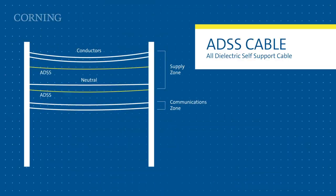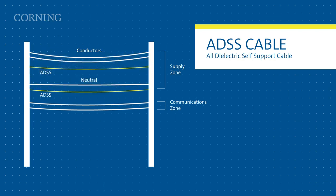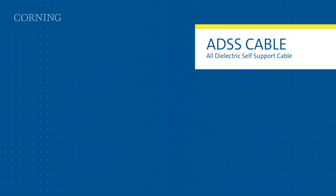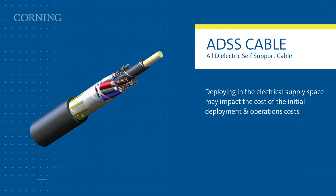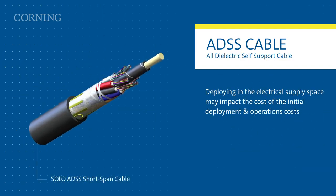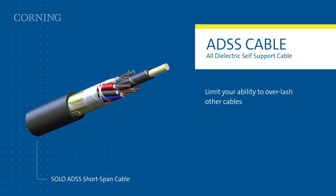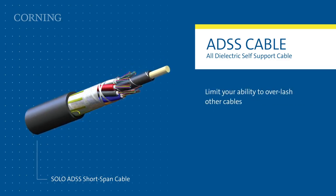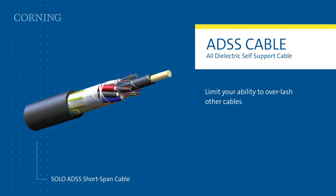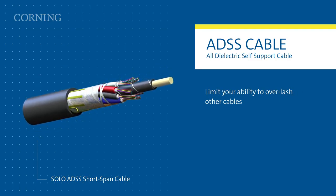Deploying in the electrical supply space may impact not only the cost of the initial deployment but your operations cost to service and maintain your cable plant over time. ADSS cables also limit your ability to overlash other cables later should additional fiber be needed.